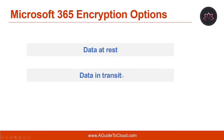So what is data in transit? Examples of data in transit include mail messages that are in the process of being delivered or conversations that are taking place in an online meeting. In Microsoft 365, data is in transit whenever a user device is communicating with a Microsoft 365 server or when a Microsoft 365 server is communicating with another server.